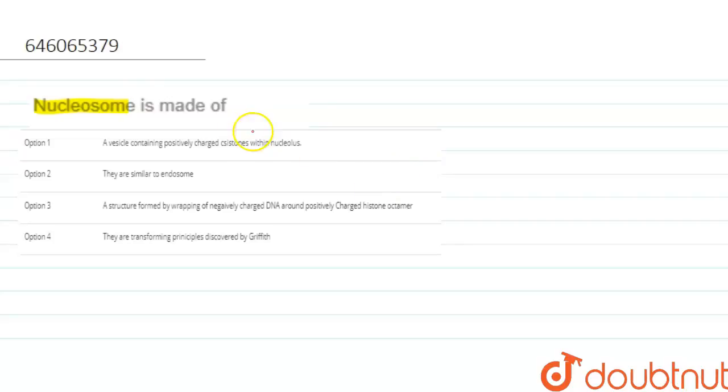So we can say that cistron, they are a section of DNA or we can say RNA molecule that codes for a specific polypeptide, that is coding for a specific polypeptide. So this is our first option that is given to us, and this polypeptide helps in protein synthesis later on.